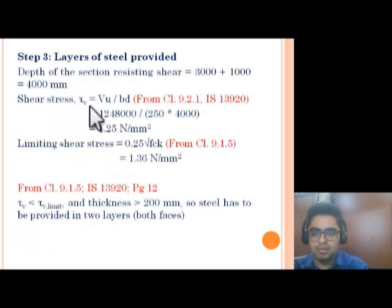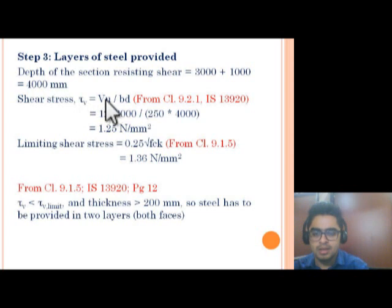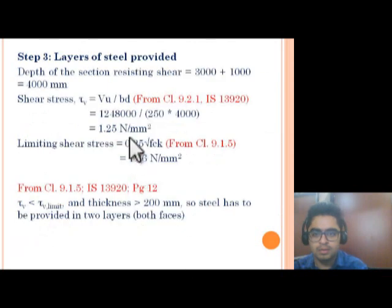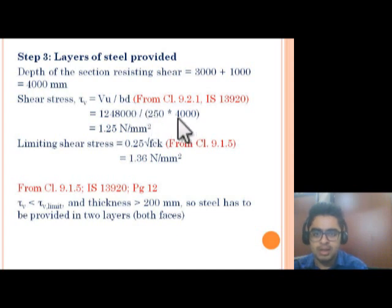Vu = 1248 × 1000 N. B is the width of the central portion of the shear wall (250 mm) and D is the depth of the section resisting shear (4000 mm). So τv = 1248 × 1000 / (250 × 4000) = 1.25 N/mm². From IS 13920 clause 9.1.11: if the factored shear stress in the wall exceeds the limiting value and the wall thickness exceeds 200 mm, reinforcement shall be provided in two curtains.